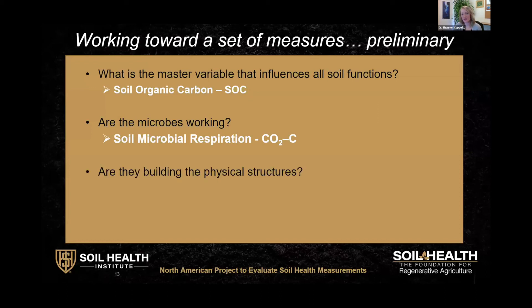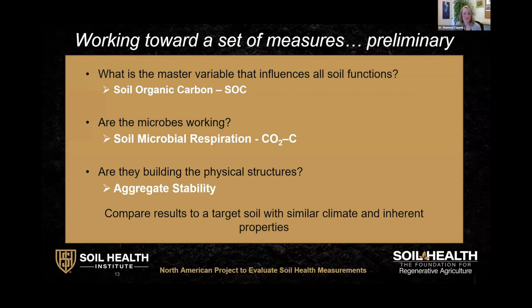Then we want to know if microbes are using that carbon to build the physical structures they need. Aggregate stability is often referred to as a physical measure, but it's influenced by the organisms, plants, fungi, and bacteria in the soil that are creating habitat. It's related to erosion and water infiltration and storage, so we think aggregate stability will also be used in multiple ways to help us quantify soil functions. These three measurements together tell a really similar story as if we had measured 15 different indicators. We think this is going to give us a good idea of whether a management practice is moving the soil in a healthy direction when we compare it to a target from a similar climate with similar inherent properties.